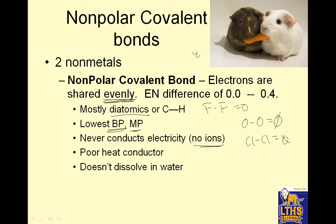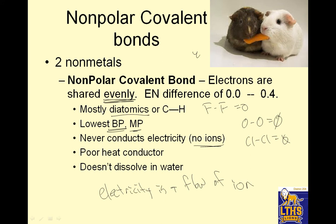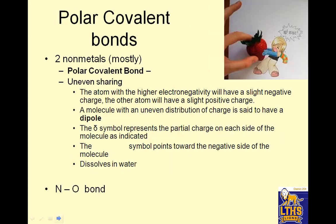They have the lowest boiling point and lowest melting point. They never conduct electricity because they have no ions. Electricity is a flow of ions — that's a great quiz question. So why does it conduct electricity? There's no ions in it. It's a poor heat conductor and it doesn't dissolve in water. So things that have nonpolar covalent bonds don't do any of those.